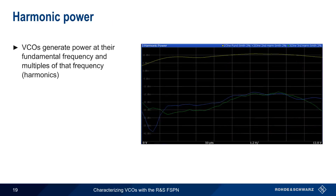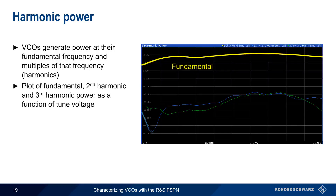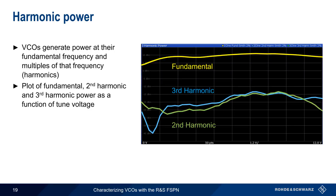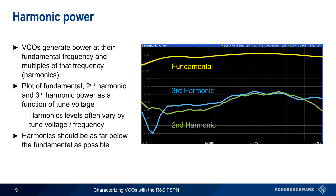Like most other signal sources, VCOs generate power not just at their fundamental frequency, but also at multiples of that frequency — these are referred to as harmonics. The harmonic power measurement plots the power of the fundamental, second harmonic, and third harmonic as a function of tuned voltage. In almost all cases, harmonics are undesirable and should be as far as possible below the fundamental, usually tens of dB in most modern VCOs.